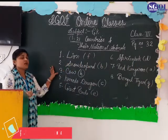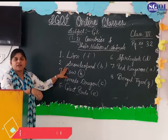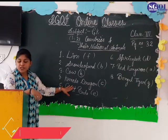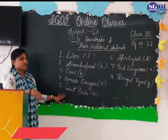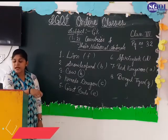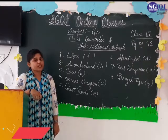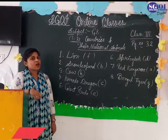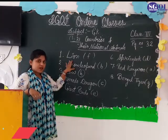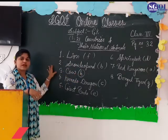Let me repeat: Lion is the national animal of Netherlands. Snow Leopard is the national animal of Afghanistan. Cow is the national animal of Nepal. Komodo Dragon is the national animal of Indonesia. Giant Panda is the national animal of China. Springbok is the national animal of South Africa. Red Kangaroo is the national animal of Australia. Bengal Tiger is the national animal of India. Students, you have to learn this exercise like this.